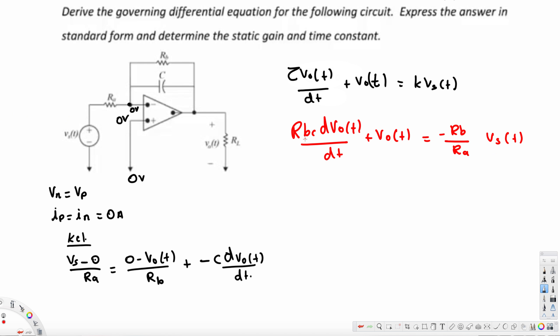Now we identify the time constant and the static gain. The time constant tau is the coefficient in front of dV_out(t)/dt, which in our case is R_B times C. So tau equals R_B C. The static gain K is the coefficient in front of V_s(t), which is negative R_B over R_A. So K equals negative R_B / R_A. That is our final answer.